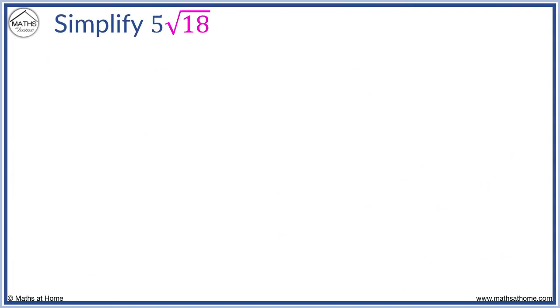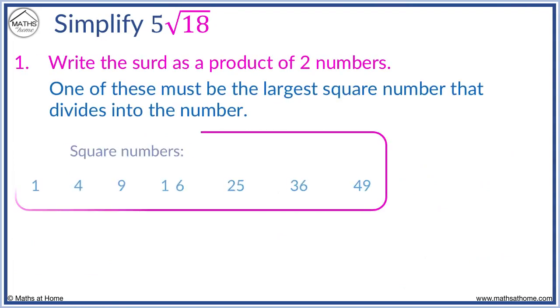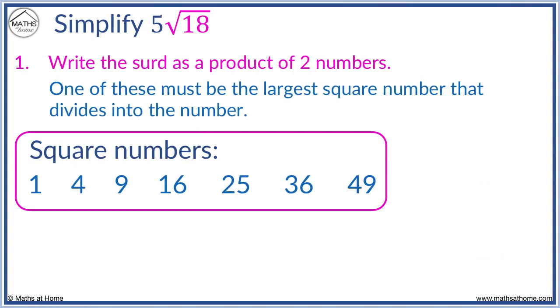This time we have a 5 in front of our surd of root 18. We simply leave the whole number out in front of the surd. We will split the root 18. So we look for the largest square number that goes into 18. This is 9.